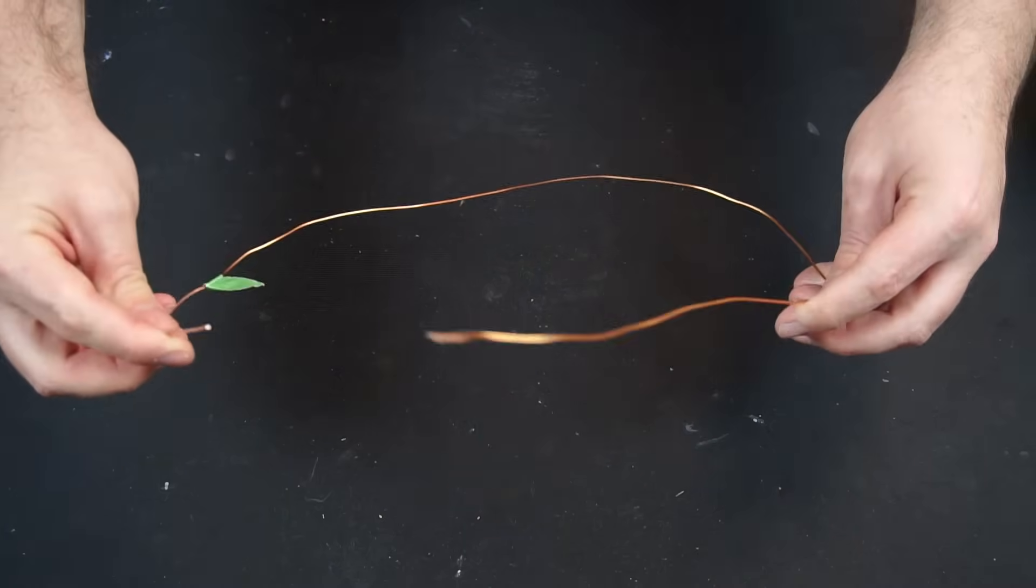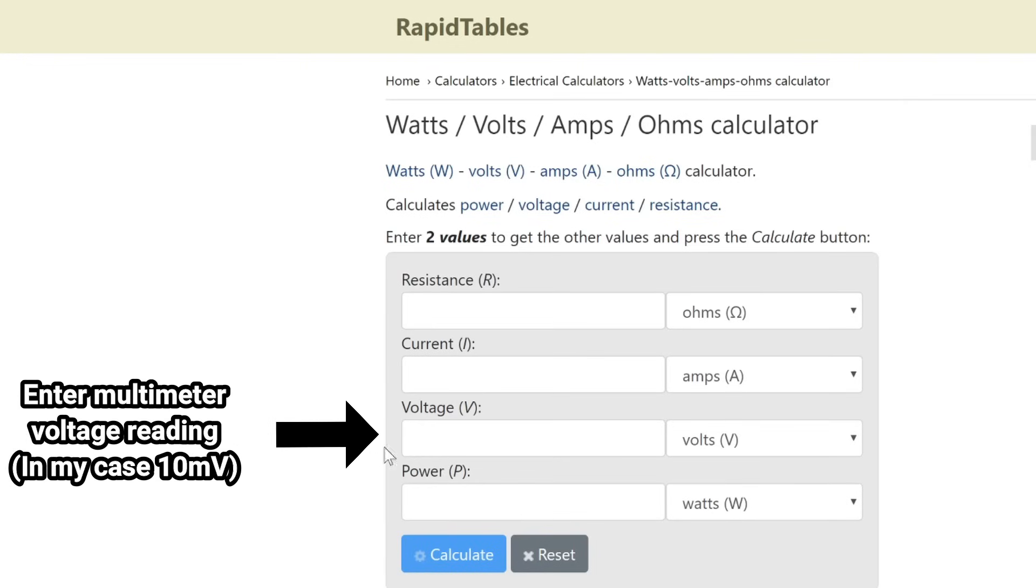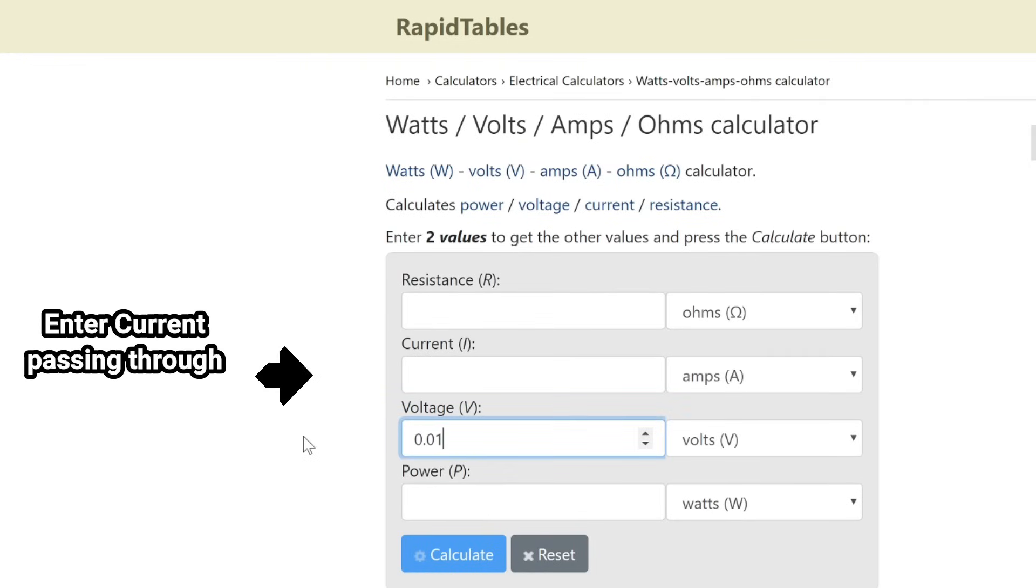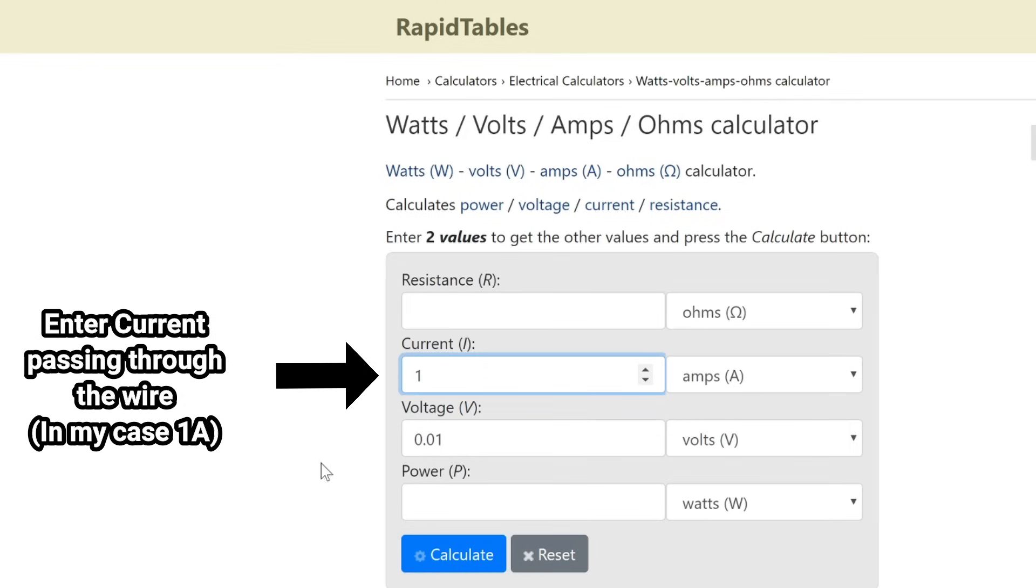I'll mark that spot with a marker and then cut the wire at the mark. Now in theory, this length of copper wire should have a resistance of 10 milliohms. And if you're wondering how I calculated that, well, of course it was Ohm's law.